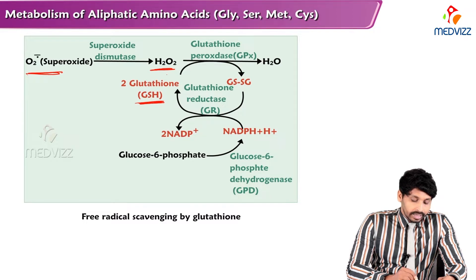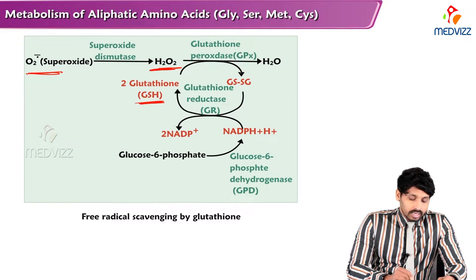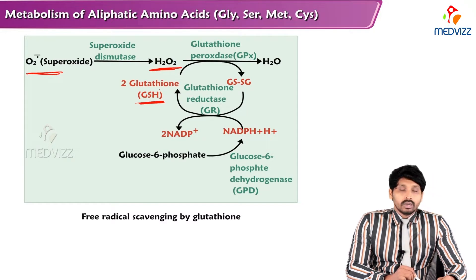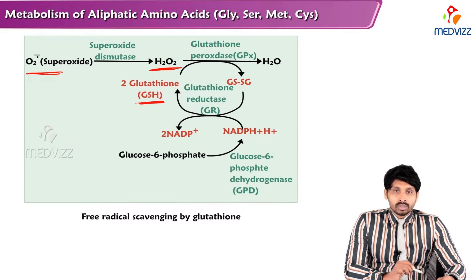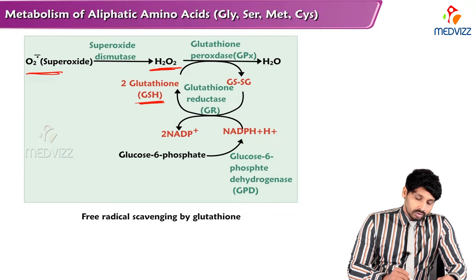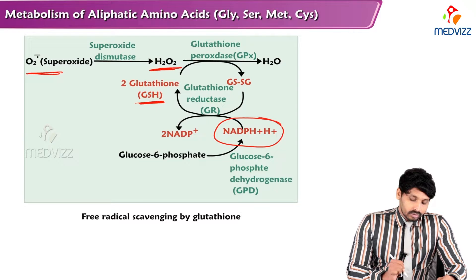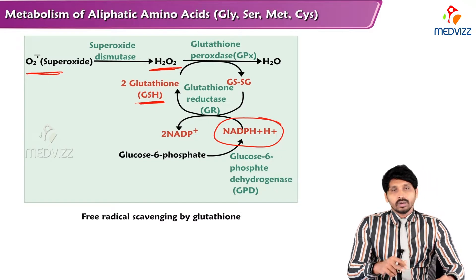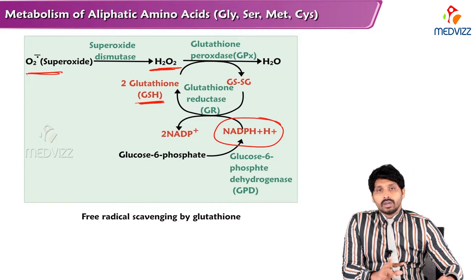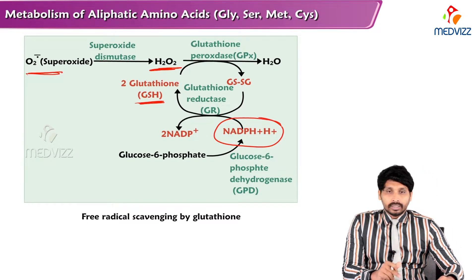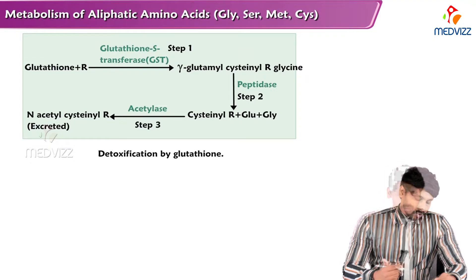Free radical scavenging by glutathione: the superoxide radical is converted to hydrogen peroxide, which is then neutralized. Glutathione can be oxidized by glutathione peroxidase, and the oxidized glutathione is reduced back to its reduced form by glutathione reductase. The donor here is NADPH+H⁺, and the donor of NADPH is glucose-6-phosphate dehydrogenase — establishing a link between free radical scavenging and the HMP pathway.